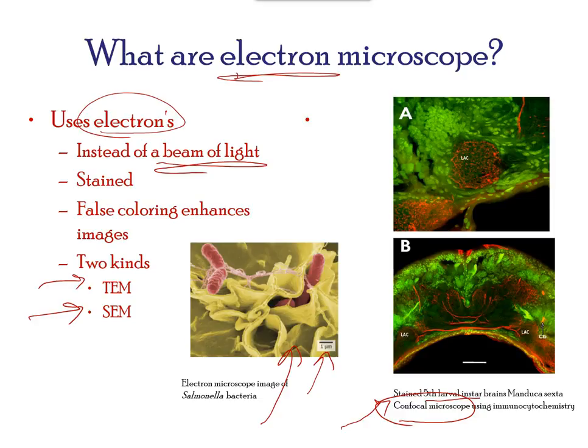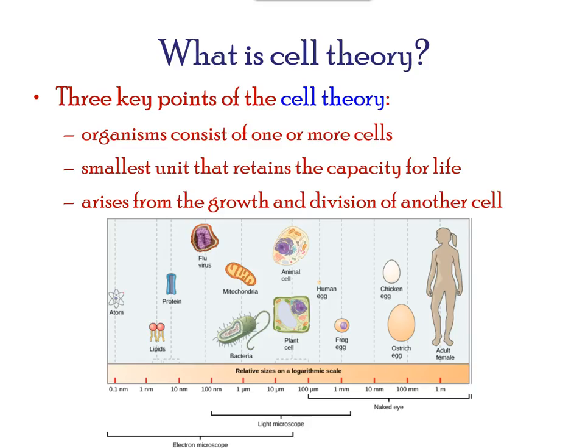The microscopes we use today are far more complex than those used in the 1600s by Antonie van Leeuwenhoek, a Dutch shopkeeper who had great skill in crafting lenses. Later, in 1665, Robert Hooke observed cells from tree bark through a lens. Since they looked like box rooms, he called them cells. Later, in 1670, Leeuwenhoek discovered live cells in his own feces.